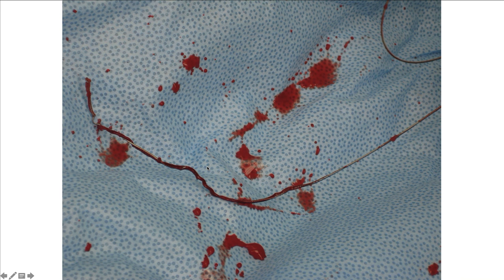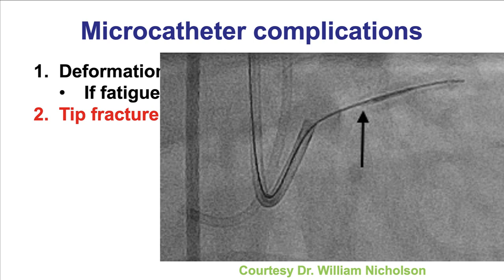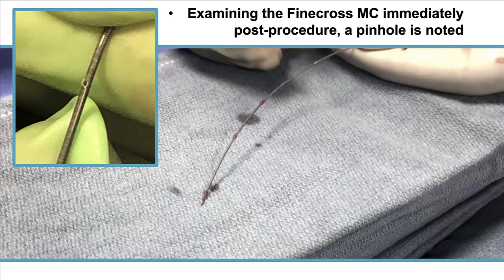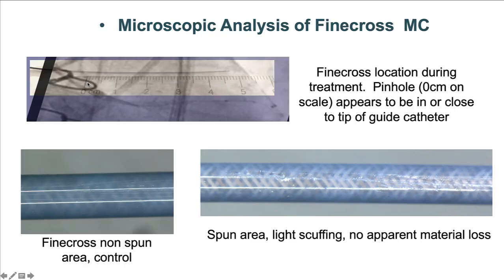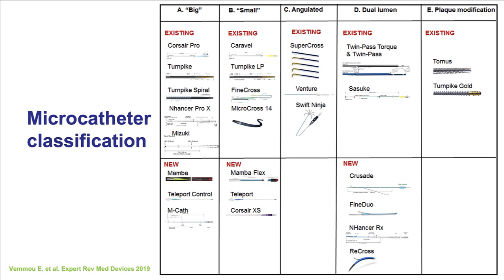Also very important: every time there is manipulation of the microcatheter, a guide wire should be inside the microcatheter lumen. Another complication is fracturing of the tip — this is more common for microcatheters that have a softer tip, and those should probably be avoided in heavily calcified and resistant lesions. A microcatheter should not come in contact with another piece of equipment, microcatheter, or balloon over the same guide wire, as interlocking can occur. Additionally, microcatheters have been used to protect side branches during atherectomy, but this is not foolproof — in one example, a Finecross used to protect a side branch was actually perforated at the site of contact with the atherectomy device.